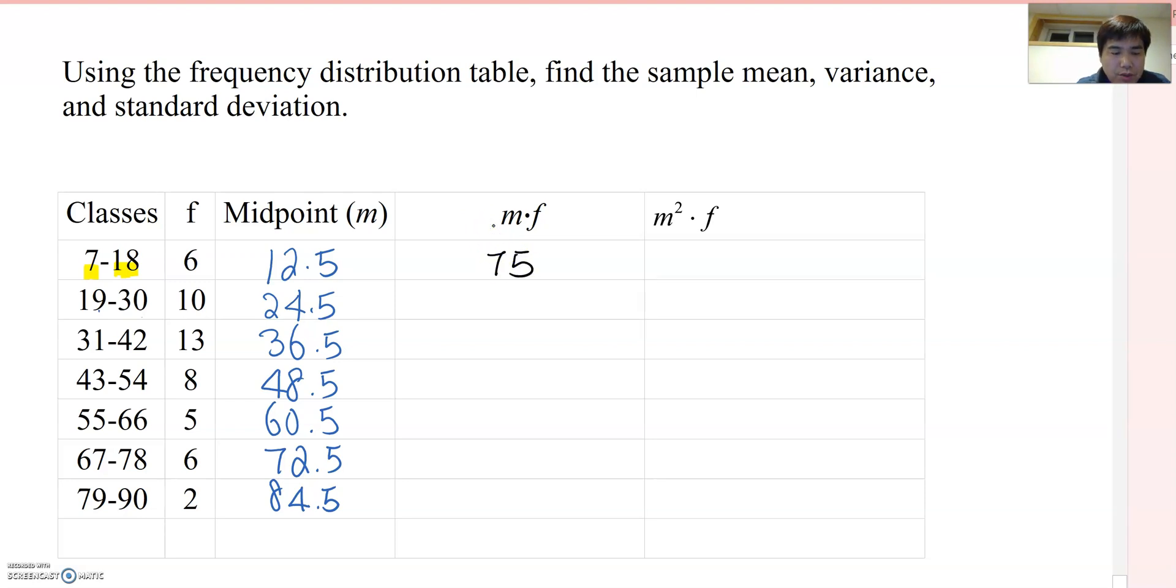Second row, so 24.5 times 10, so you get 245. And 36.5 times 13, then you will get 474.5. If you keep on doing it, then you will get the value like this.